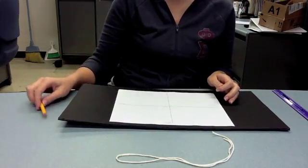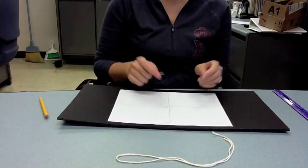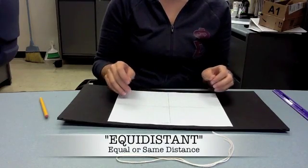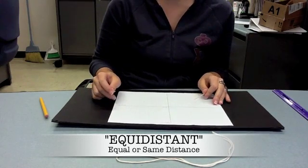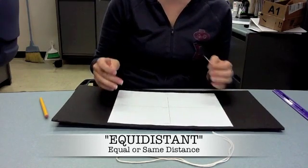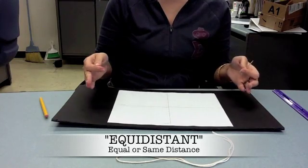So I want to make sure that my foci are equidistant from the origin so that my origin can be the center of my ellipse. Remember that equidistant means that they're the same distance or equal distanced.